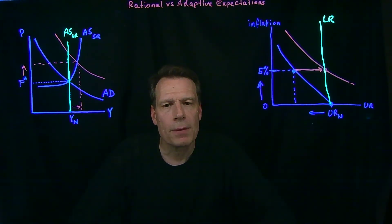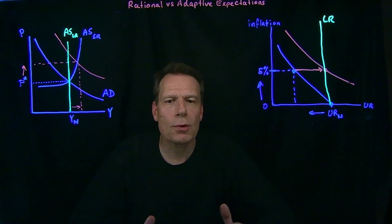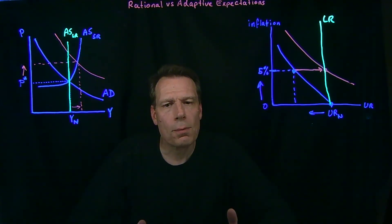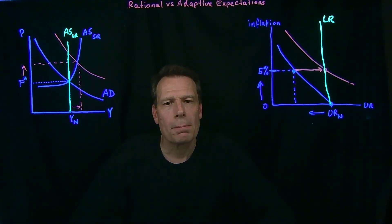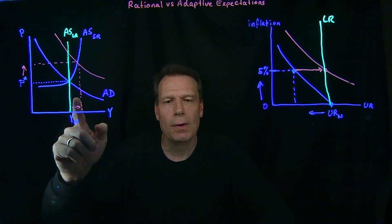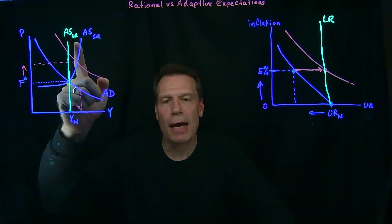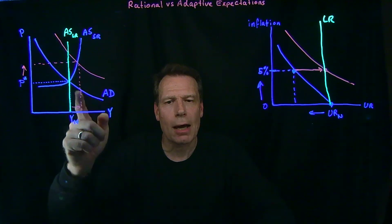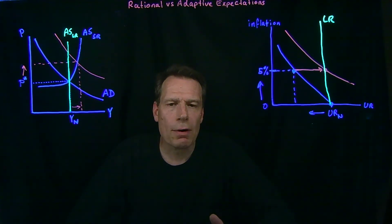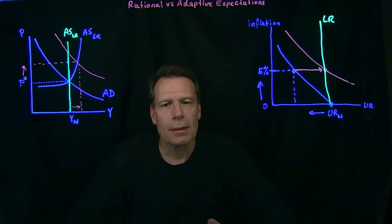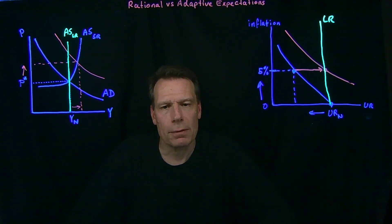And if we think that expectations are fully rational, workers would immediately adjust their expectation about inflation as their nominal wages increase. That makes no room for expansionary policy to actually lower the unemployment rate below the natural rate, and the short-run Phillips curves become exactly the same as the long-run Phillips curve. In the same way, if we think expectations are fully rational, then there's no room for expansionary policy to cause increases in GDP above the natural level in the short run, because now the short-run aggregate supply curve would lie just on top of the long-run aggregate supply curve.